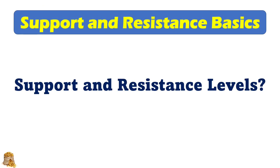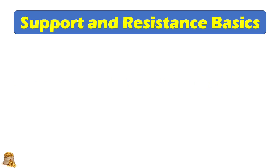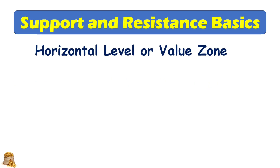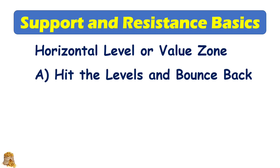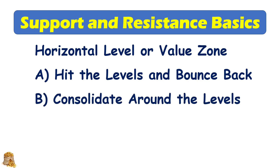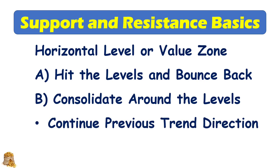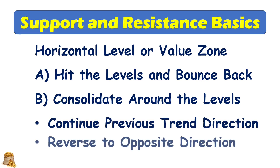What are the support and resistance levels? Basically, the support and resistance levels are the horizontal levels and the value zones — the level and value zone are interchangeable. There are two scenarios. The first is when the market goes to a price level and then bounces back quickly — that defines a support and resistance level. Second, when the market goes to a price level and consolidates for a while, the market can either continue the previous trend direction or reverse to the opposite direction. Both results also define support and resistance levels.